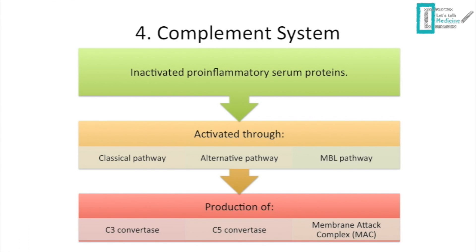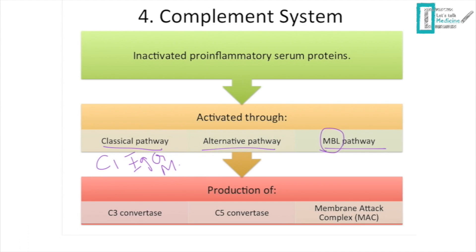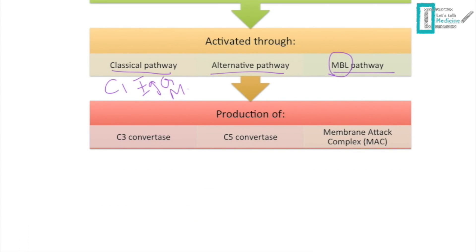The fourth mediator is the complement system — pro-inflammatory proteins found inactivated in the serum, produced by the liver. It can be activated through three pathways: the classical pathway (C1 binding to IgG or IgM), the alternative pathway (microbial products), and the mannose-binding lectin (MBL) pathway.